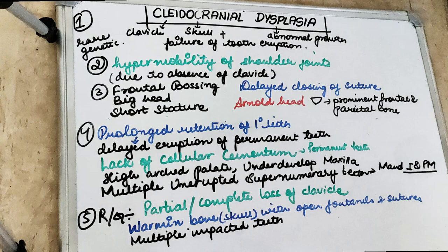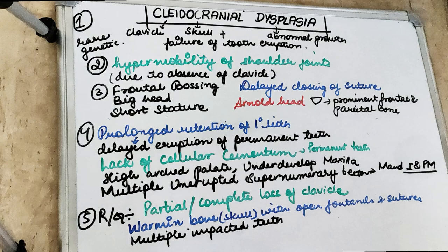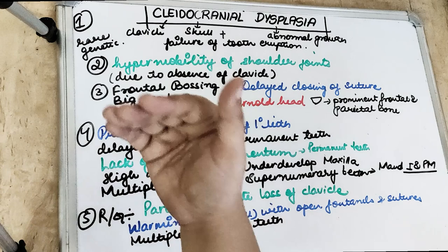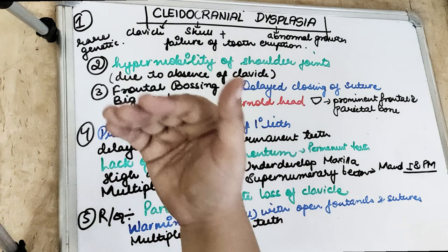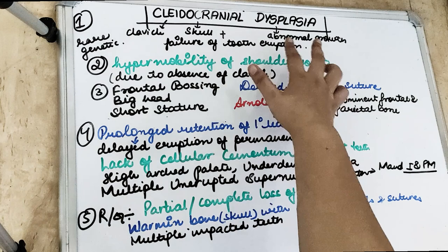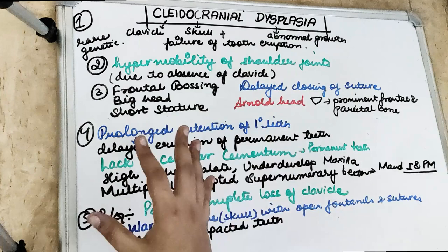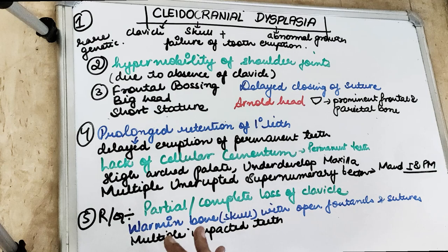Welcome back to another 5-in-5 series, where we cover each topic under 5 headings in 5 minutes. Today's topic is cleidocranial dysplasia. As we know, dysplasia means abnormal growth. Cleido-cranial means we will be talking about the clavicle — there is going to be complete absence or hypoplasia of one or both clavicles, abnormal growth of the skull with open fontanelles and delayed closing of sutures, as well as failure of tooth eruption.